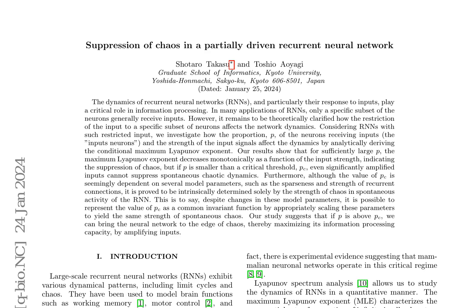Partially driven recurrent neural networks, RNNs, where only a subset of neurons receives inputs, are investigated to understand how the proportion of input neurons and input signal strength affect network dynamics.